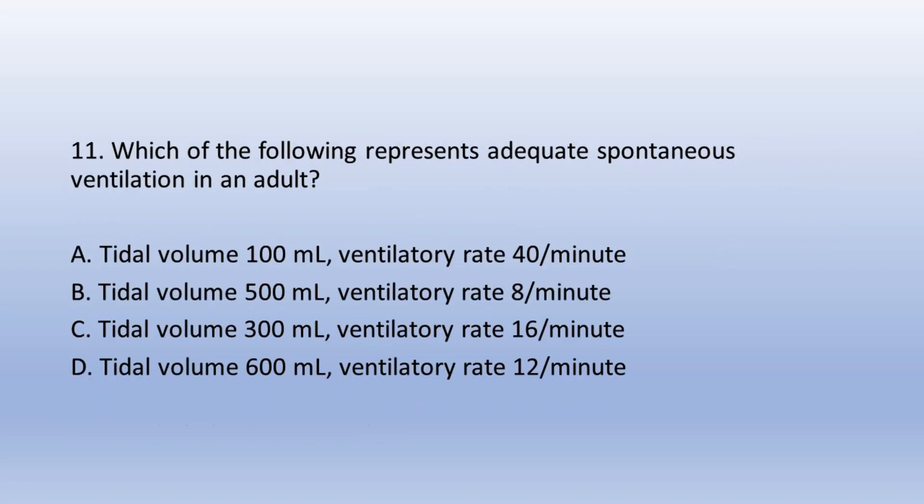Question 11. Which of the following represents adequate spontaneous ventilation in an adult? A. Tidal volume 100 mL, ventilatory rate 40/min, B. Tidal volume 500 mL, ventilatory rate 8/min, C. Tidal volume 300 mL, ventilatory rate 16/min, D. Tidal volume 600 mL, ventilatory rate 12/min. The answer is D. Tidal volume 600 mL, ventilatory rate 12/min.